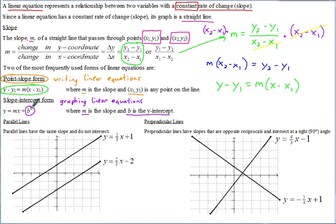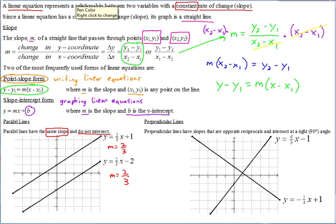Now let's look at some special types of lines. First, parallel lines. Parallel lines have the same slope and do not intersect — they're not the same line. Looking at two equations in slope-intercept form, you can see the slope on the first is two-thirds and the slope on the second is also two-thirds. The Y-intercept on the first is 1 and on the second is negative 2, so those are different.